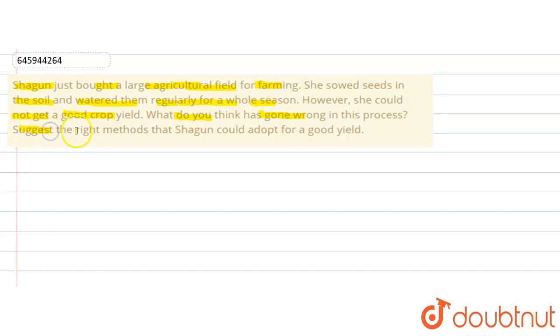In this question, we need to suggest the right methods that Shagun could adopt for a good crop yield. Shagun is a girl who has bought agricultural land. She has given seeds, water, and done everything, but she could not get a good crop yield. So what is wrong with the whole process? Which methods can increase the crop yield? Let's see the reasons.